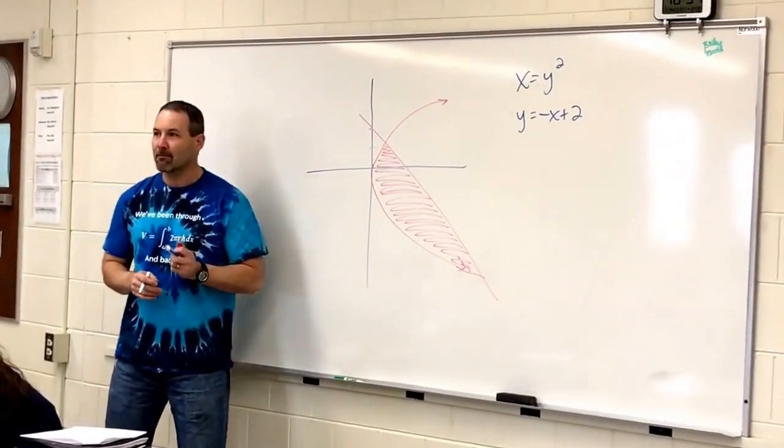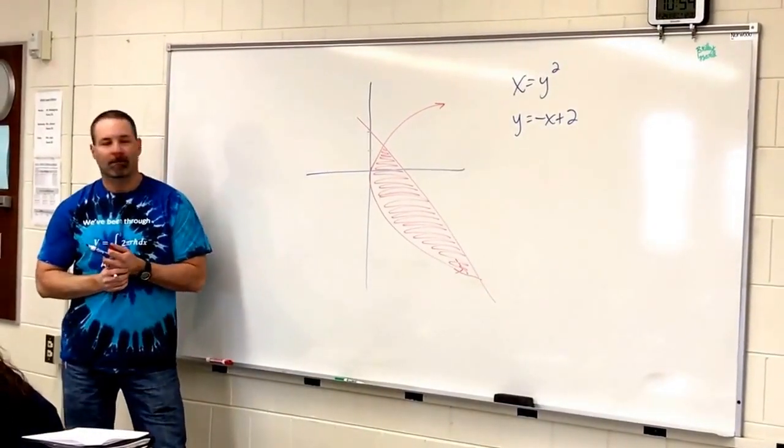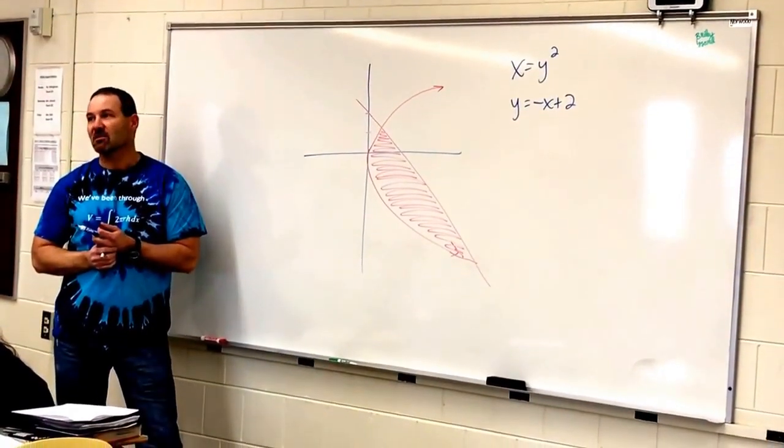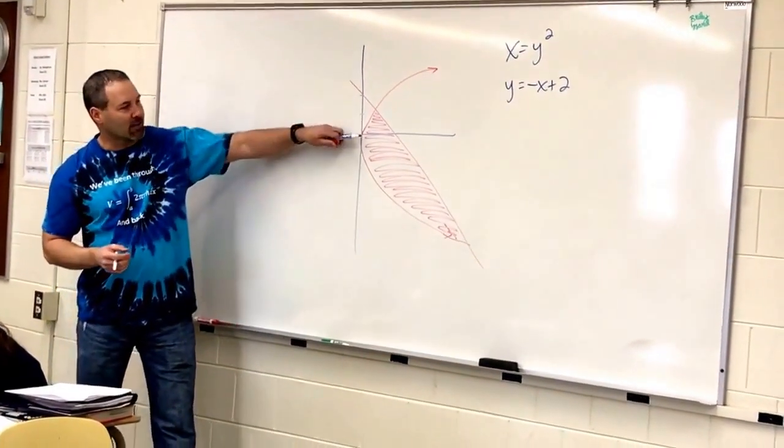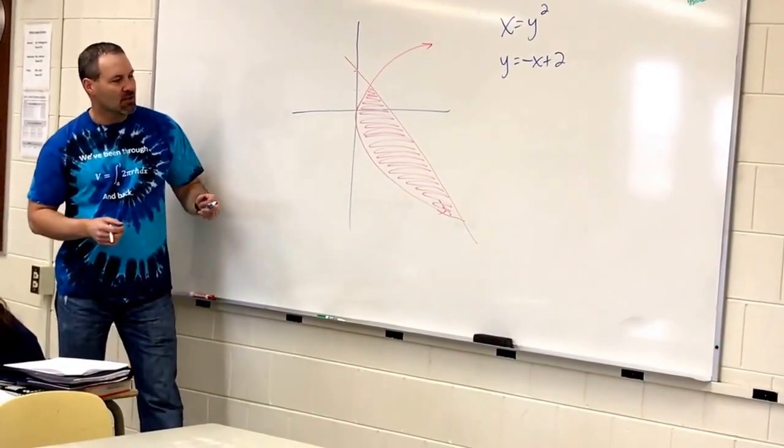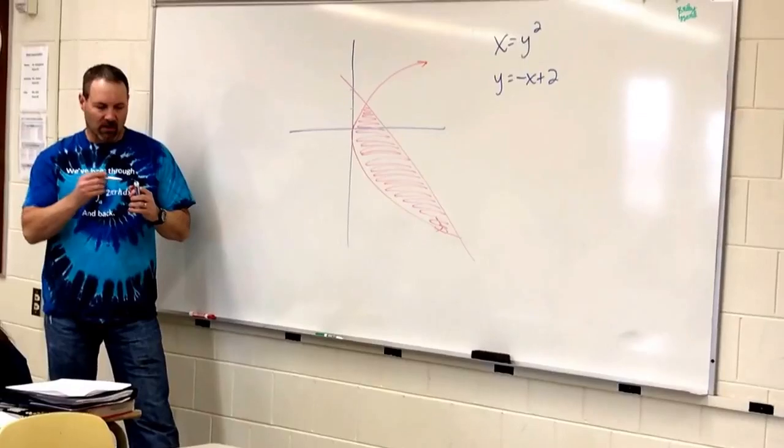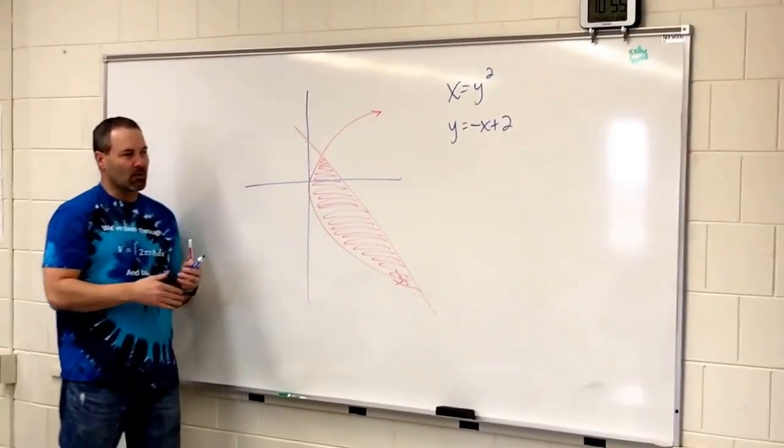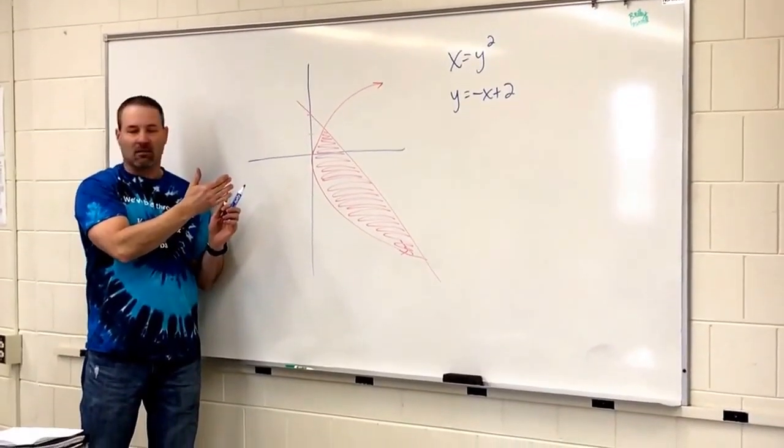So, which one's on top? It's a trick question. Do you see that, like, right here, this one's on top, but then it switches? Okay, so this would be an example where, rather than doing top minus bottom, we would do right minus left.